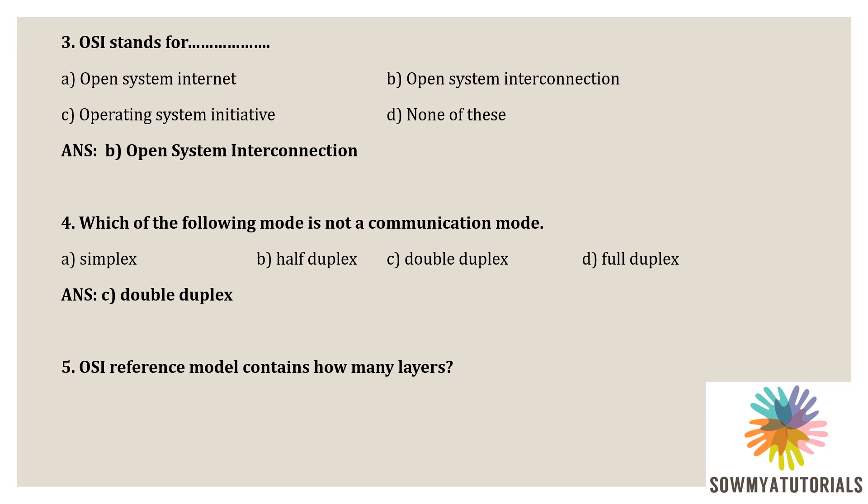Next question: OSI reference model contains how many layers? Already I told that the OSI reference model has seven layers. So the correct option is option C, seven.